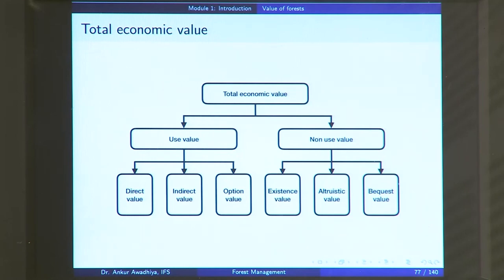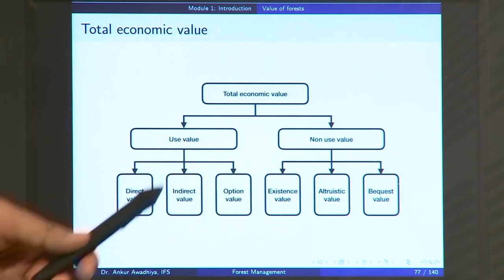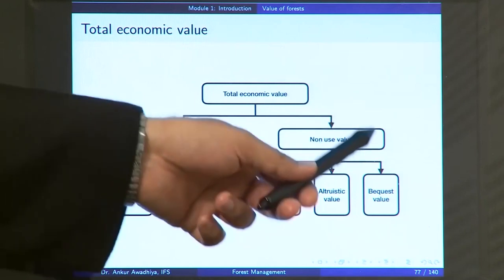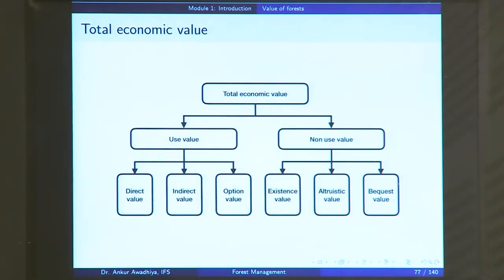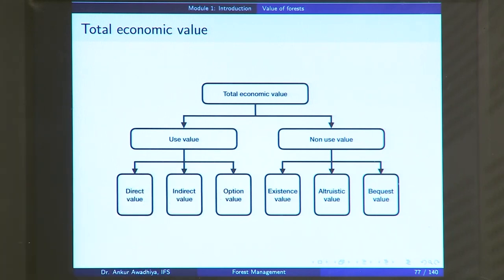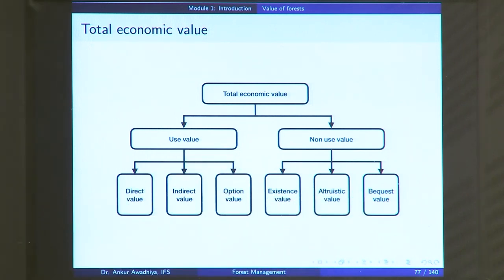So what we said so far is that the total economic value is the sum of use and non-use value. Use value is something you are deriving out of using this resource; non-use value is something you are deriving without using this resource. Use value comprises direct value that you derive directly, indirect value that you derive indirectly, and option value for a future use — direct or indirect — of the resource. If you look at the non-use value, you have existence value, altruistic value, and bequest value.